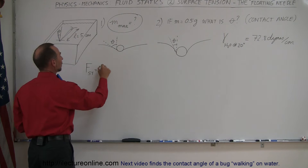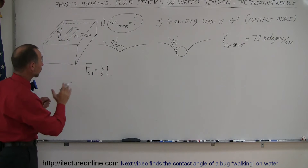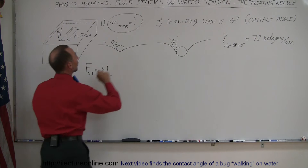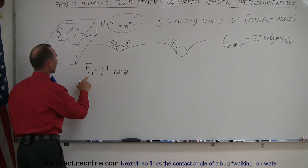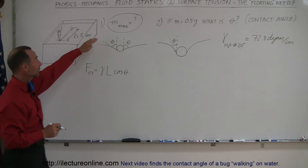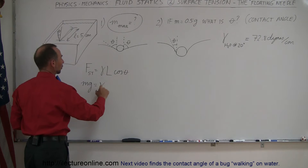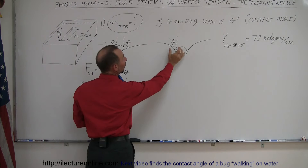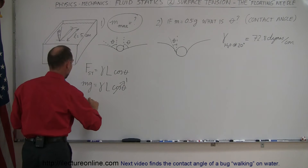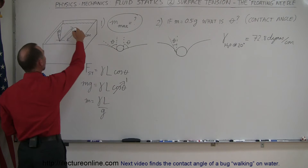The surface tension acts along both sides of the needle, so the angle is the same on both sides, times the cosine of that contact angle, cosine of theta. The surface tension force will equal the weight of the object. Since we're looking for the maximum weight or maximum mass, mg equals the coefficient times length times cosine of theta. The cosine of theta equals one because the maximum force of surface tension occurs when the contact angle goes to zero, and cosine of zero is one. Therefore m equals the coefficient times L divided by g.